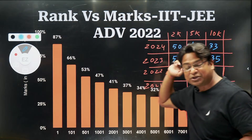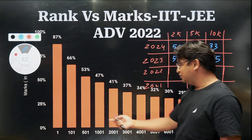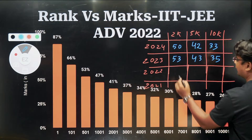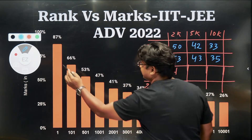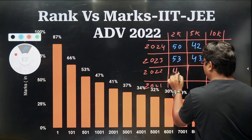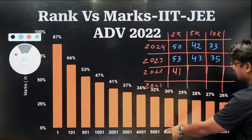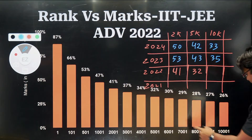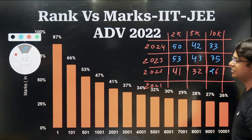For 2022, the paper was quite difficult and that is visible from the marks. The 2000 rank was obtained at a mere 41%, the 5000 rank at 32%, and the 10,000 rank at 26%.